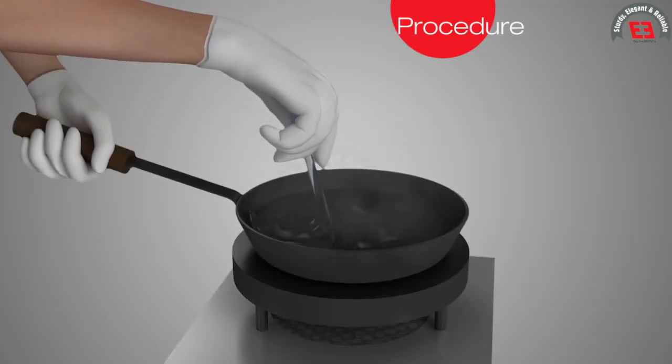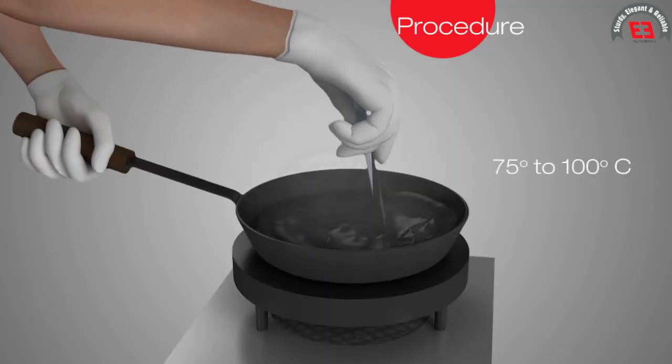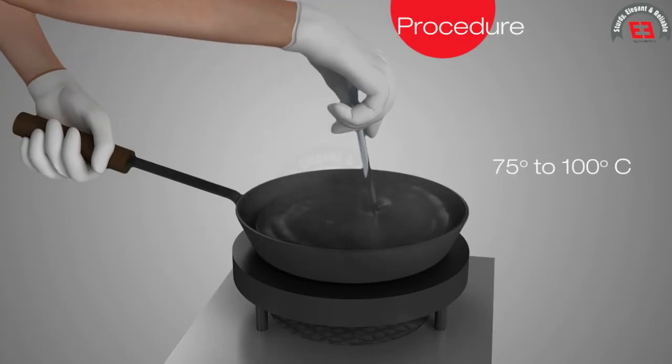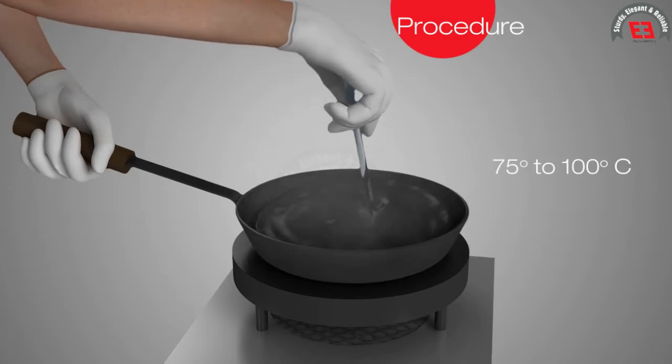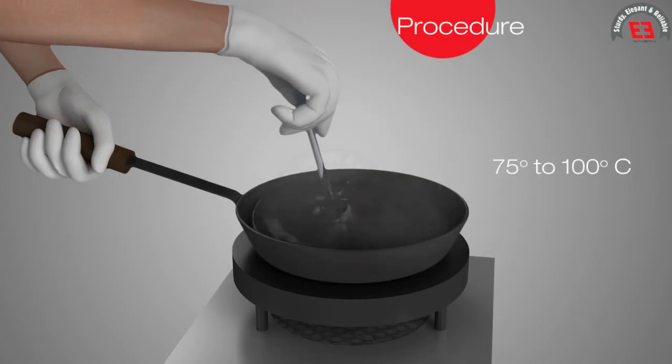Procedure. The bitumen is heated to a pouring consistency about 75 to 100 degrees Celsius above the temperature at which bitumen softens. The sample material is thoroughly stirred to make it homogeneous and free from air bubbles and water.